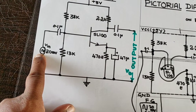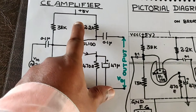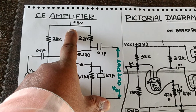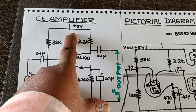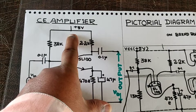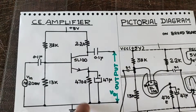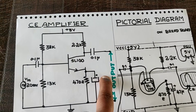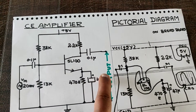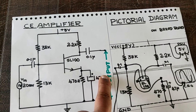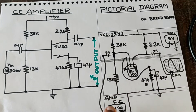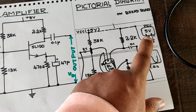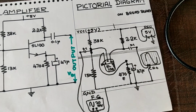On the left side is a function generator, at the middle of the arrangement is a power supply, and on the right side is the output — that means the CRO is on the right side. It is connected in the same way.